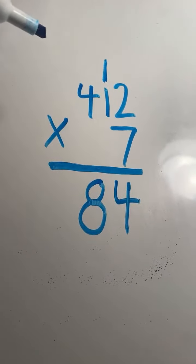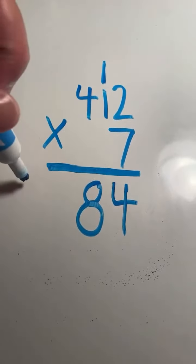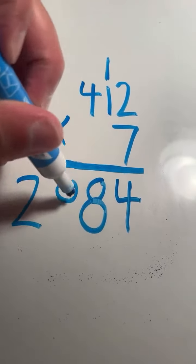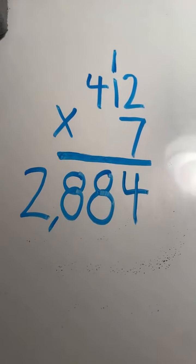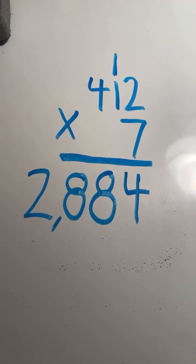We only regroup when our product is 10 or more. 4 times 7 equals 28, and we have our final answer here. 412 times 7 equals 2,884.